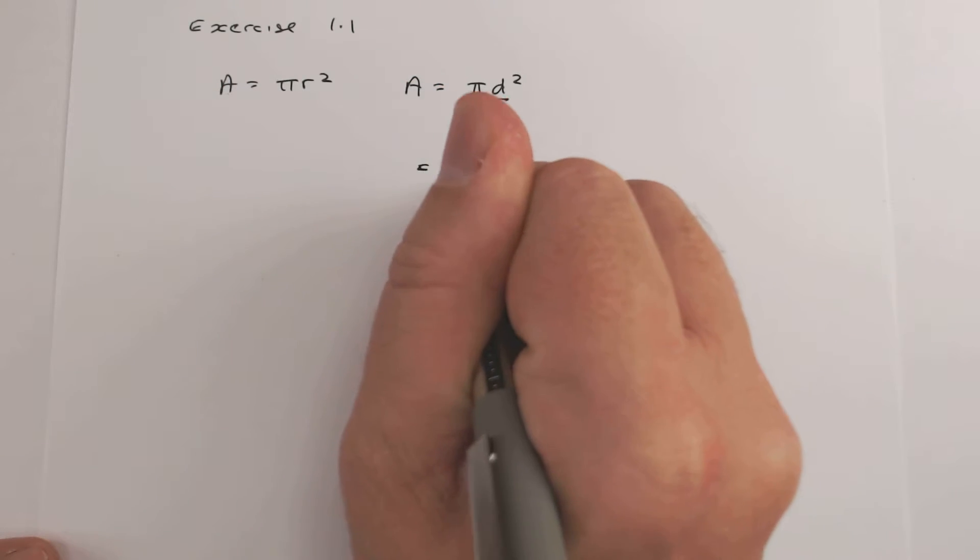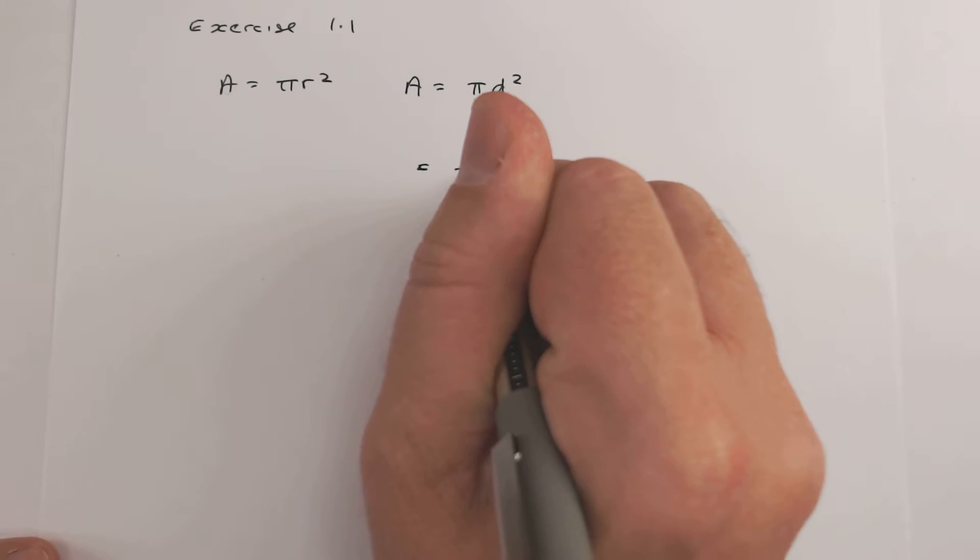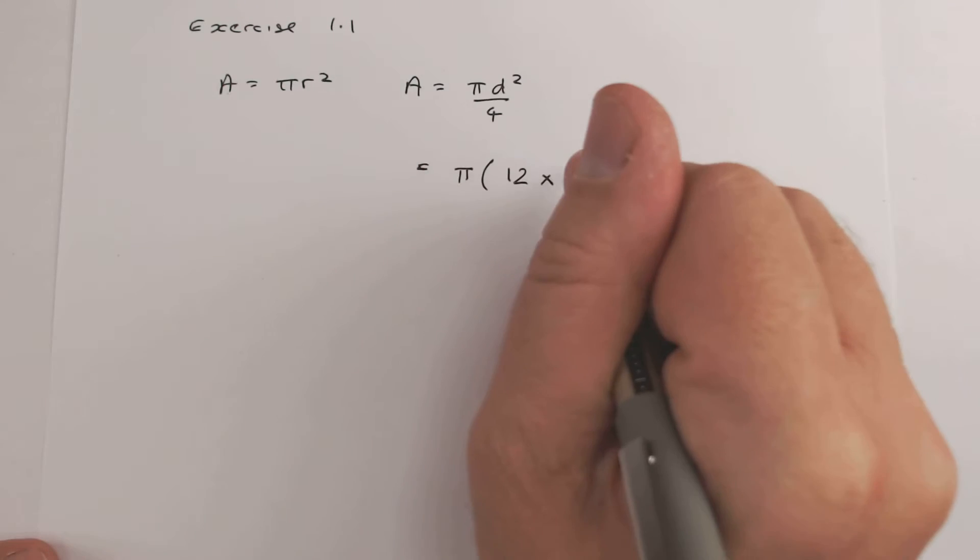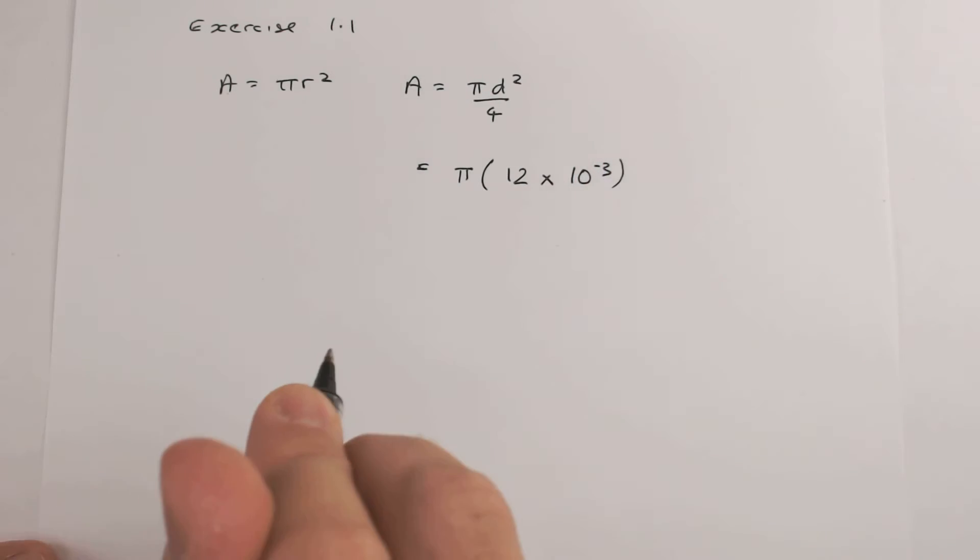So I've got a 12 millimeter cable. I need to convert 12 millimeters into meters, so I just stick a 10^-3 on the end.